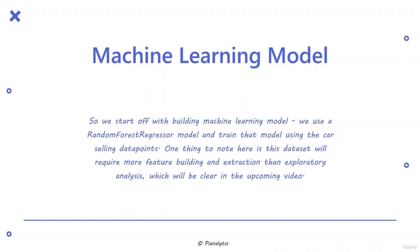We start off with building a machine learning model using a random forest regressor, and train that model using the car selling data points. One thing to note here is that we will require more feature building and extraction than exploratory analysis. The dataset is structured in such a way that you first have to extract data from the data points, and only then can you do exploratory analysis to understand more about the data.